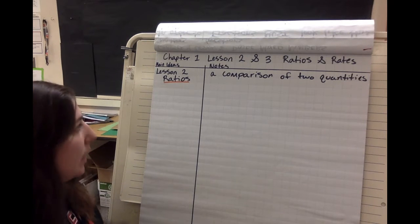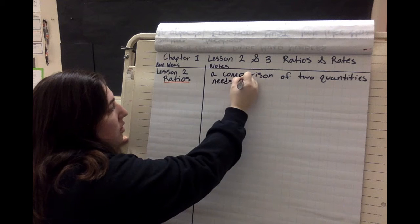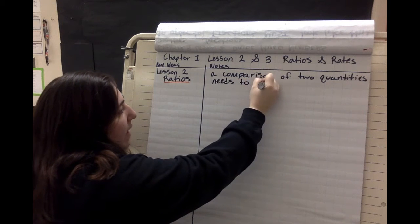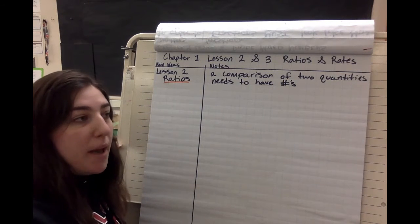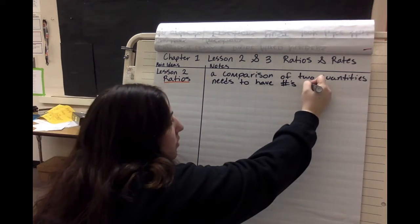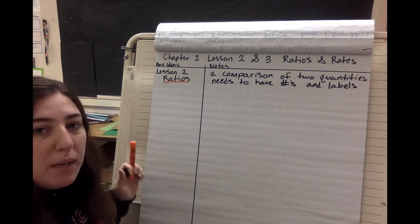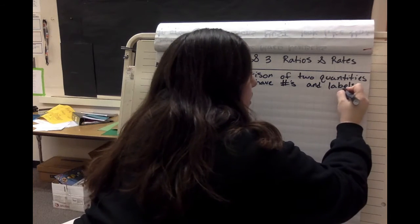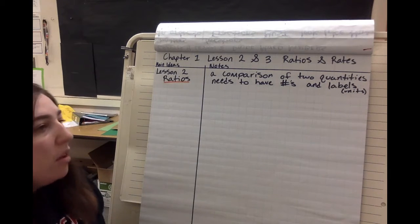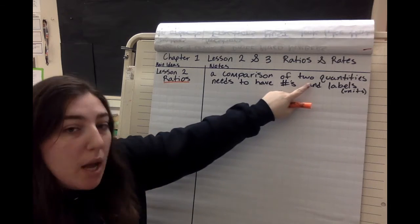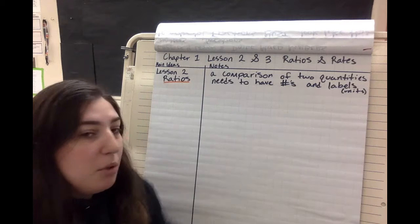So what we need for a ratio — it needs to have numbers, the amount, and labels. The labels would be our units. Again, a ratio is a comparison of two quantities. An amount needs to have numbers and labels — its units.